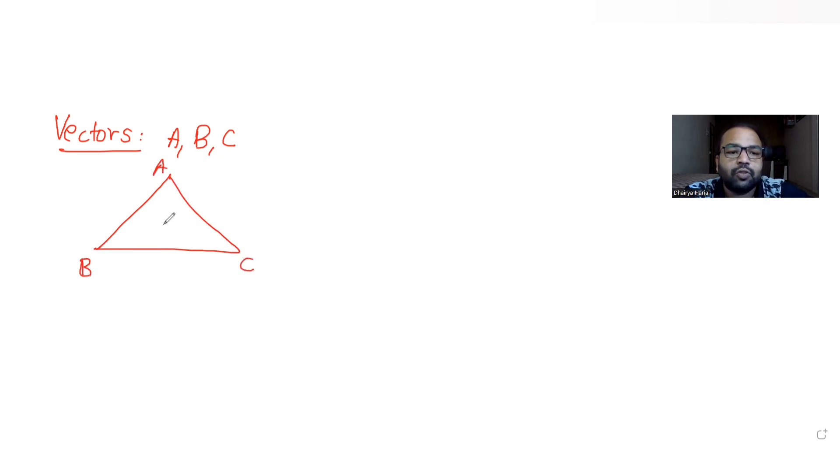So these are the vertices of triangle ABC, and we have to find the value of vector AB plus vector BC plus vector CA.